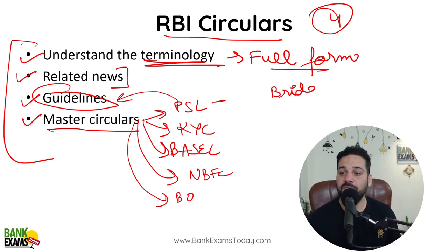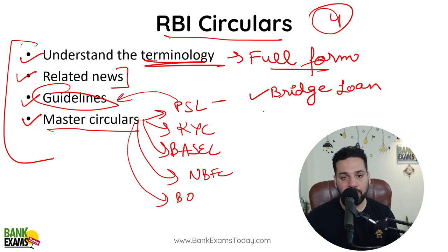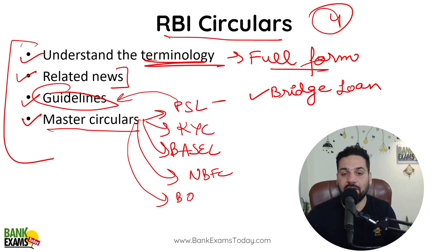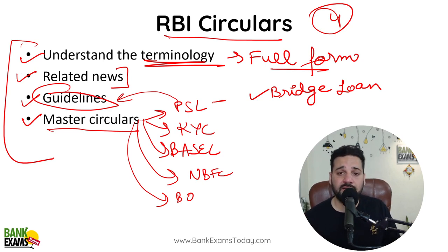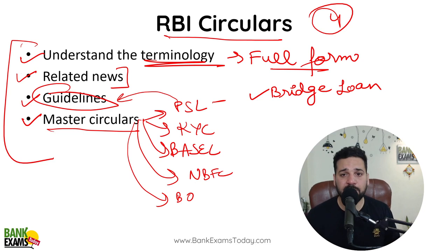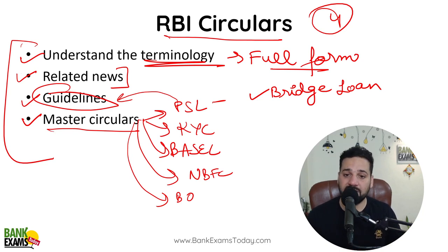Bridge loan terms are taken from RBI circulars themselves — crystallization, loan consortium. Consortium kya hota hai? Jab bahut saare lenders milke kisi company ko, kisi borrower ko loan dete hain, toh unka consortium bana hota hai — in case of a default, they work together, that is a consortium. You should know this. You will understand these terms only when you are reading RBI circulars carefully, word by word. That is why it is very necessary to read RBI circulars. Many students don't read properly — they skim through the news and move on. If you have studied guidelines in detail and read master circulars, only then can you answer these terms and understand related news.